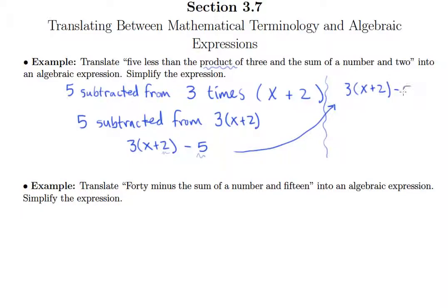So three times X, three times two: three X plus six minus five. And of course, six minus five is one. So the simplified expression after being translated is three X plus one.